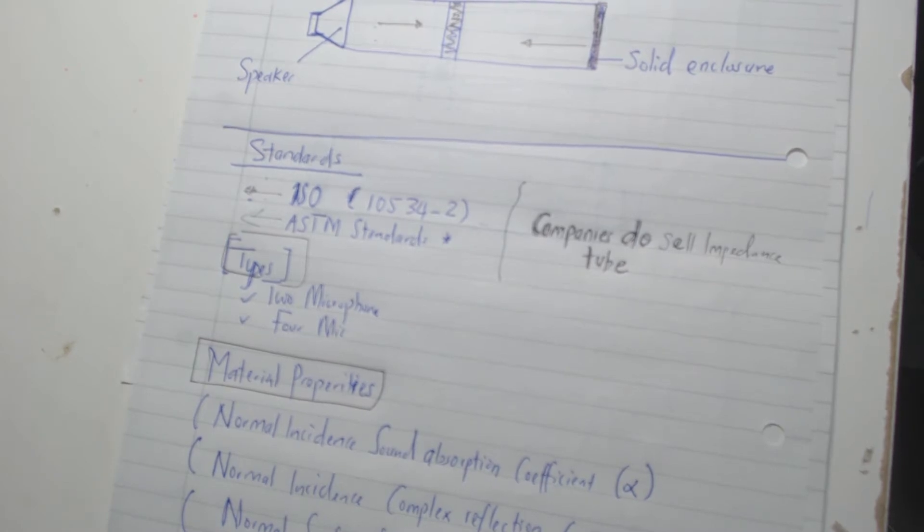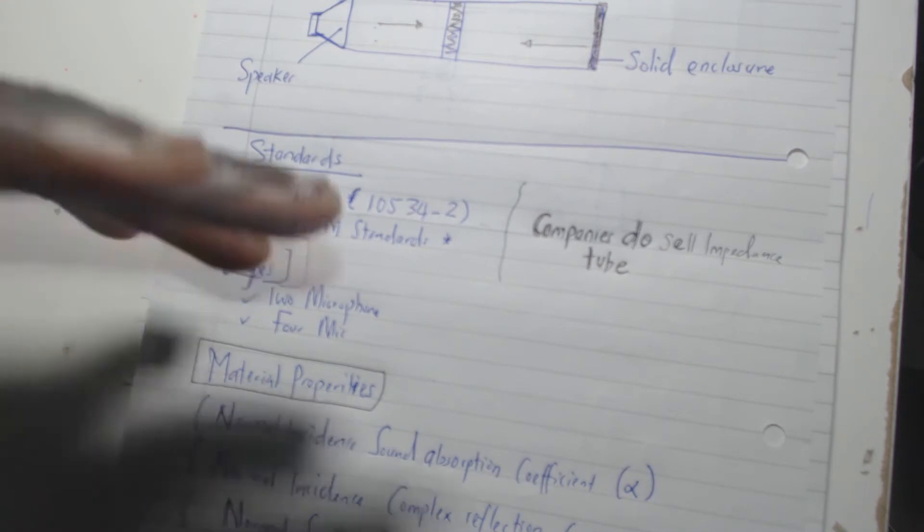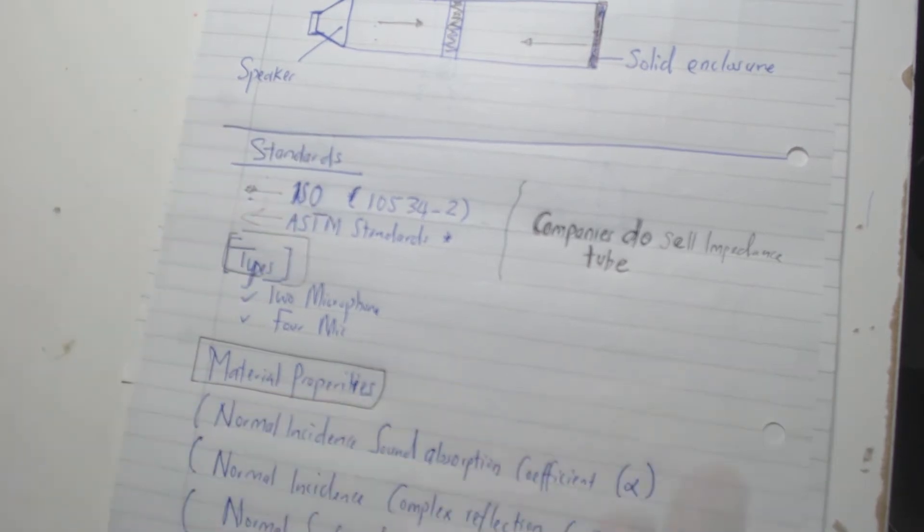These are required because as an engineer, for example, say you come up with a material and you test that material and say you go to a company and tell them, listen, I have this material, it has an absorptivity of, I don't know, point nine, which would be high absorptivity. They would want to check if you've actually set up your apparatus to actually meet the standards.